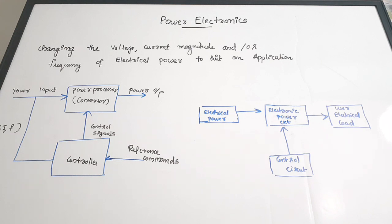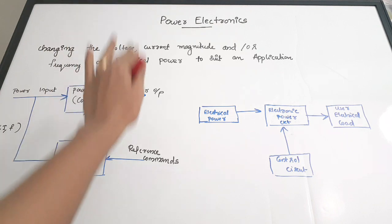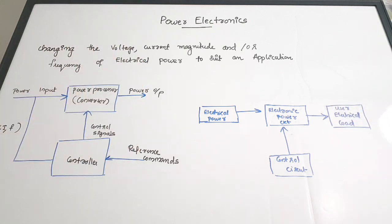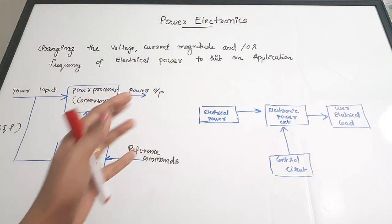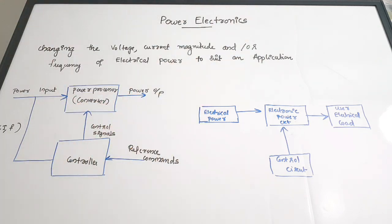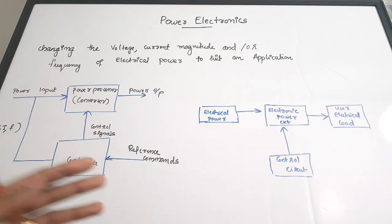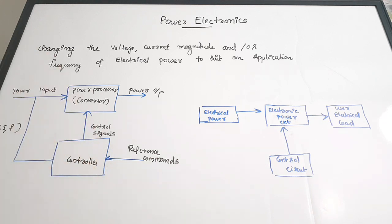This process of controlling and converting power levels is done in power electronics. As a definition, power electronics is used to change the characteristics such as voltage, current, magnitude of voltage and current, and frequency of electrical power to suit it for a particular application — changing voltage, current, or frequency to convert it into a form suitable for an application.